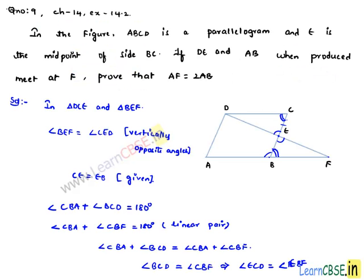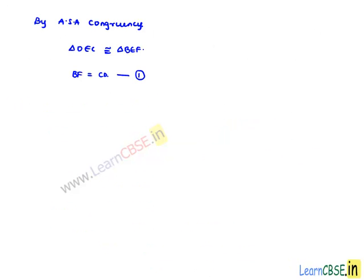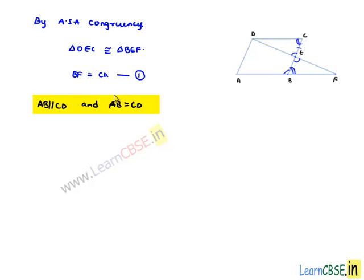Now, we know that in the parallelogram, opposite sides are equal and parallel. We can say here, AB is parallel to CD and AB will be equal to CD.